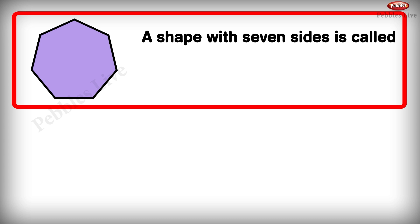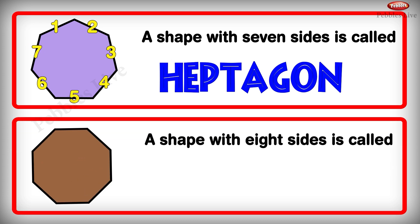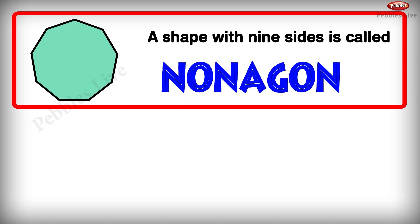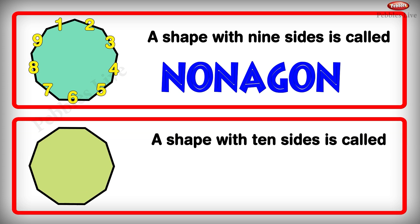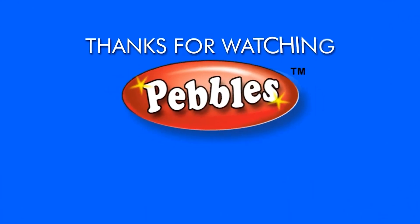A shape with 7 sides is called a Heptagon. A shape with 8 sides is called an Octagon. A shape with 9 sides is called a Nonagon. A shape with 10 sides is called a Decagon.